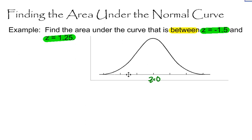A z-score of negative 1.5 is going to be right about here. So I'll label that.